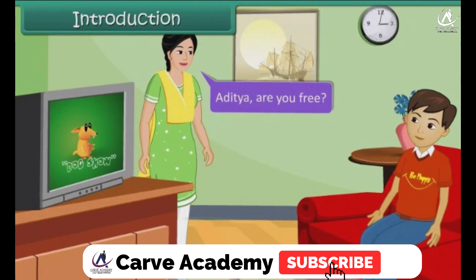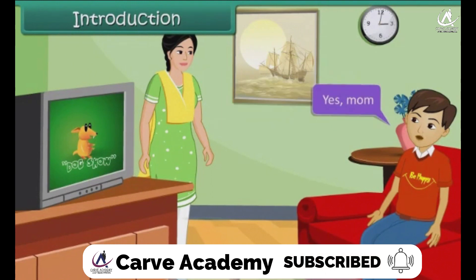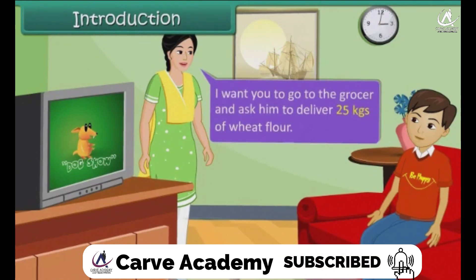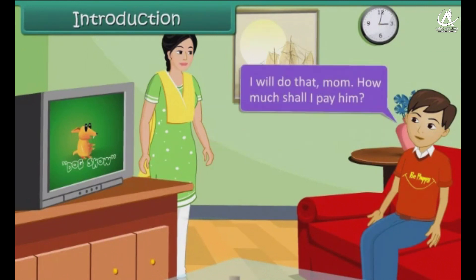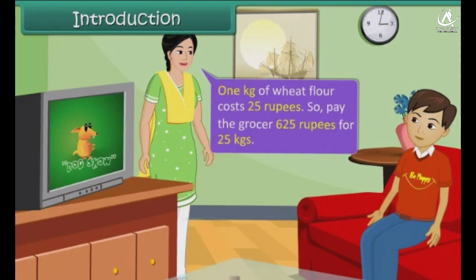Aditya, are you free? Yes, mom. I want you to go to the grocer and ask him to deliver 25 kgs of wheat flour, okay? I'll do that, mom. How much shall I pay him? 1 kg of wheat flour costs 25 rupees. So pay the grocer 625 rupees for 25 kgs.